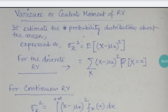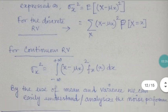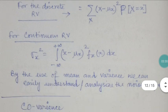For continuous random variables, sigma x squared equals the integral from minus infinity to plus infinity of (x minus mu x) squared times f(x) dx. Here f(x) is the probability density function. For the discrete case, use the PMF; for the continuous case, use the PDF. The remaining terms are the same, so the sigma formula is essentially the same structure for both continuous and discrete random variables.